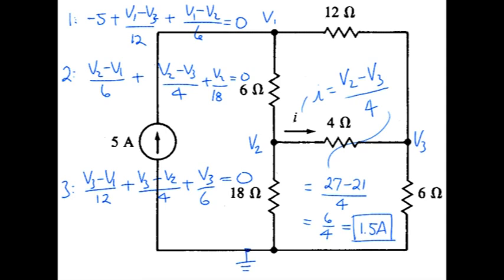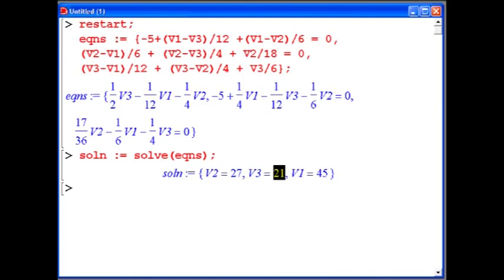If you wanted to confirm in your own work that you were getting the same voltages, simply come back here and make note of V1 is 45 volts, V2 is 27 volts, and V3.